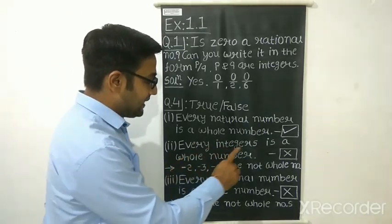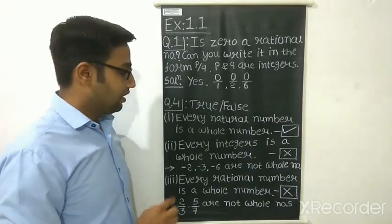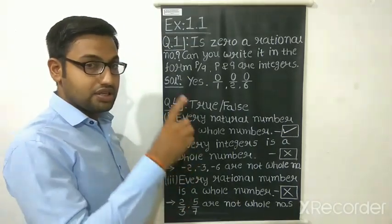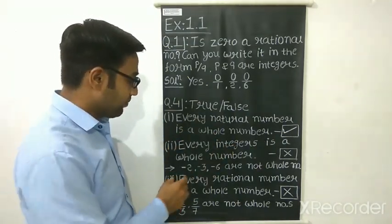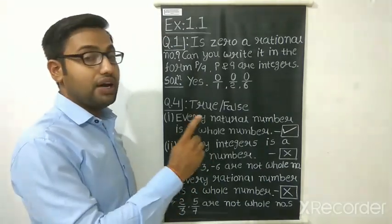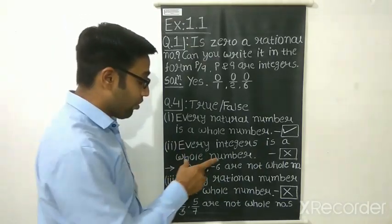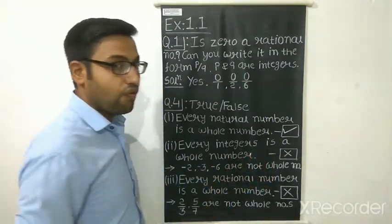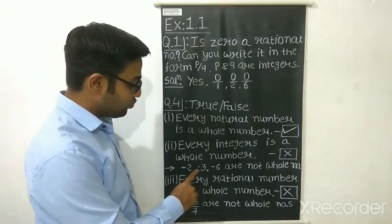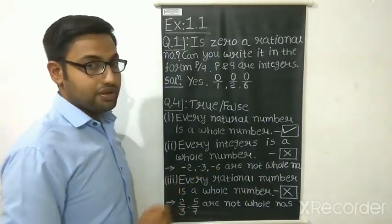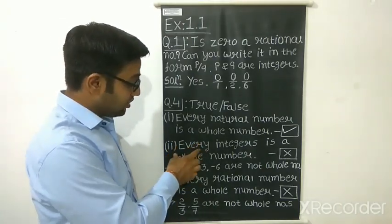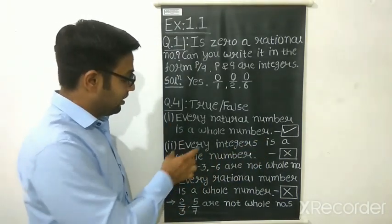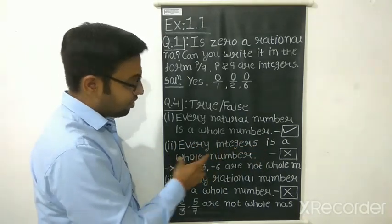Second statement: every integer is a whole number. We know that integers include negative numbers, 0, and positive numbers, while whole numbers contain only 0 and positive numbers — negative numbers are not there. So every integer is not a whole number. This statement is false. The reason is that -2, -3, -6 are not whole numbers. If the statement said 'some of the integers are whole numbers,' then it would be true.